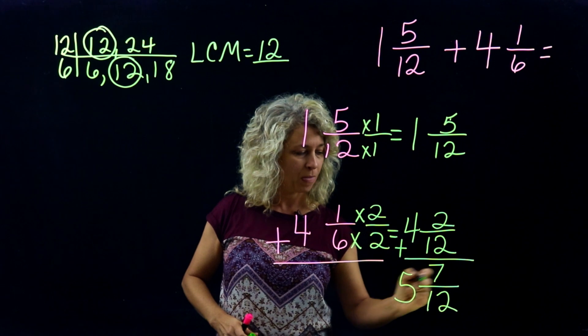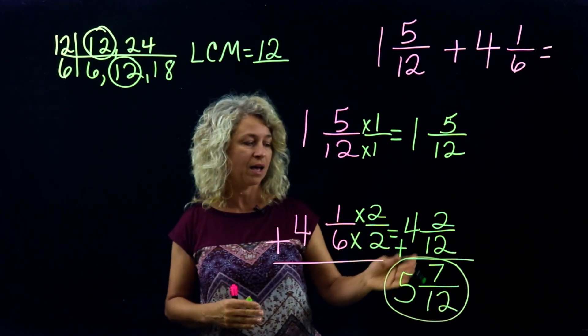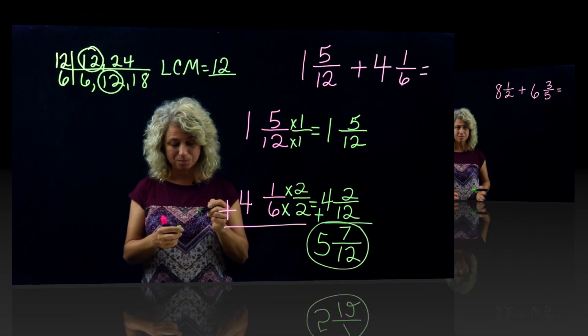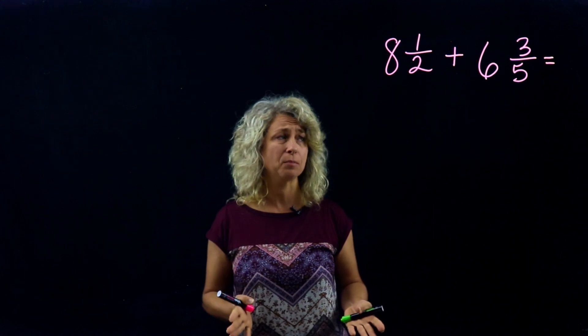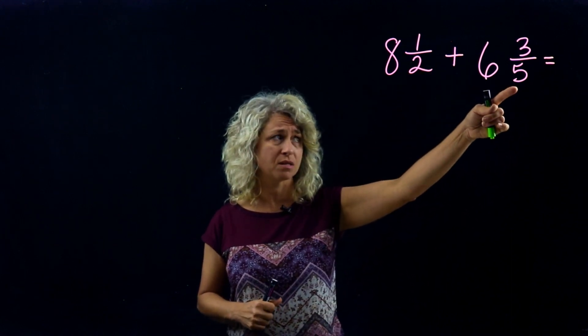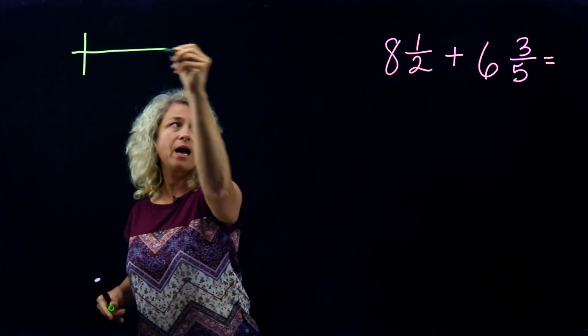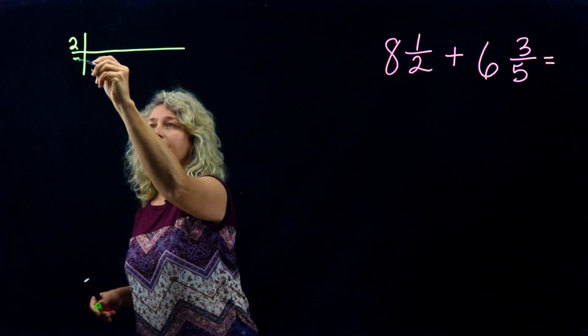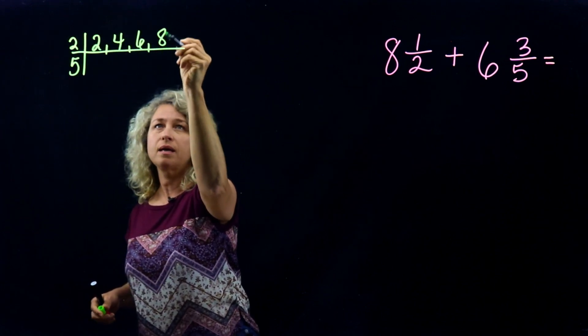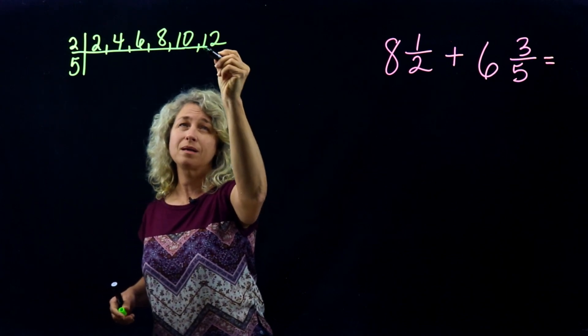So here is your complete mixed number: 5 and 7/12. Alright, let's try another example. Okay, so for our second example, look at the problem. Quickly evaluate: are the denominators the same? No. So let's quickly find the LCM. List out 2 and 5. 2, 4, 6, 8, 10. I could continue a few, but you'll see once you get really good at this that you'll probably in your mind have an idea of what your LCM is.